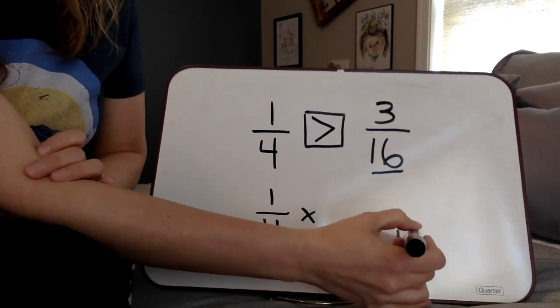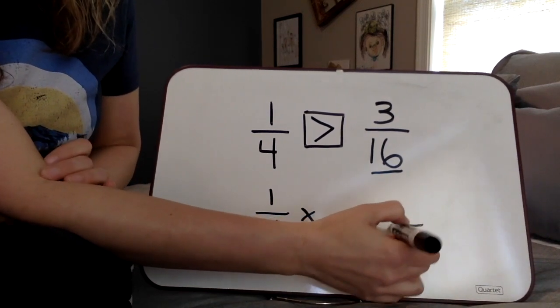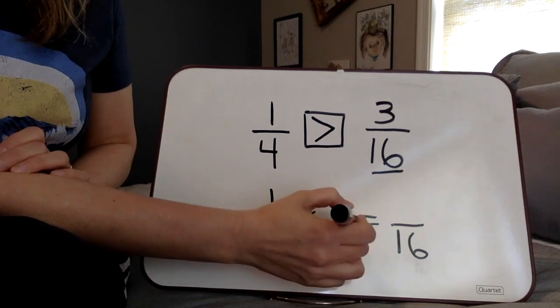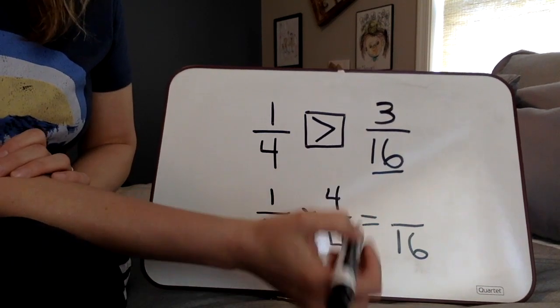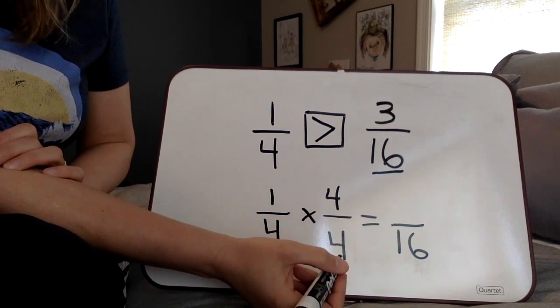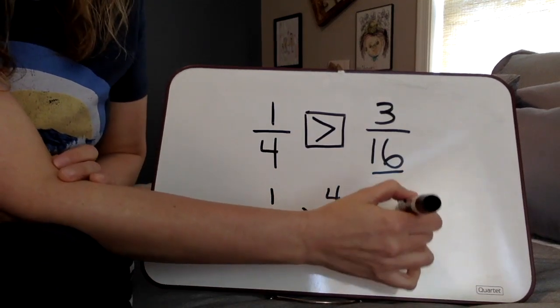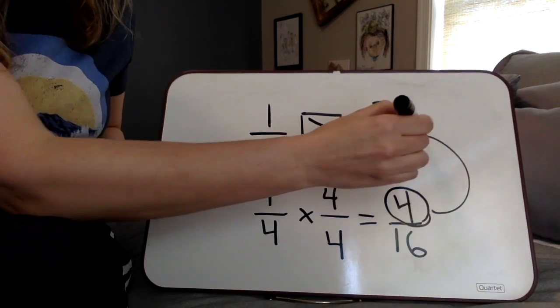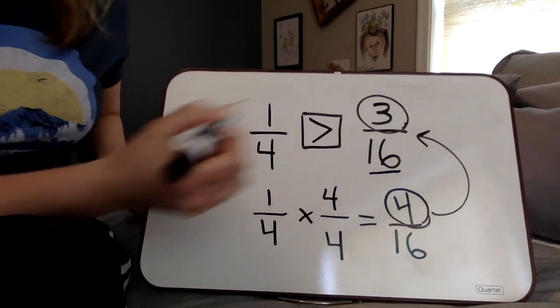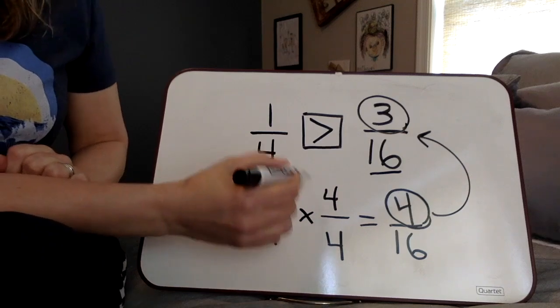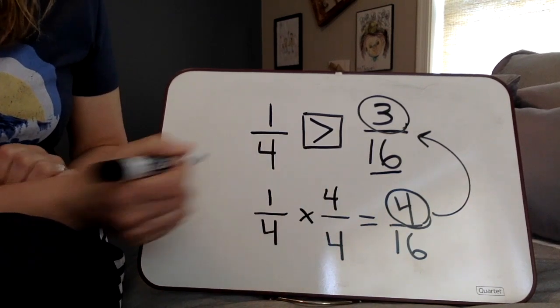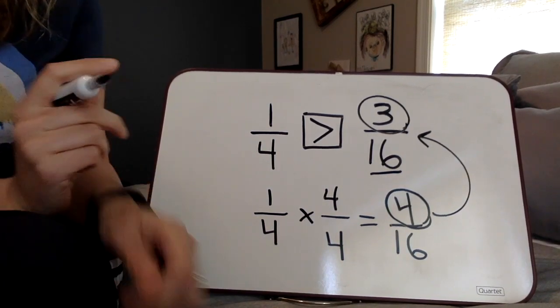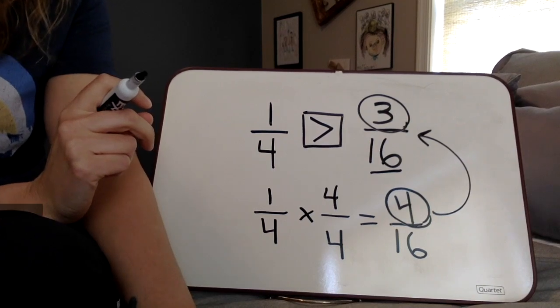So 4 times what is going to give us 16? 4 times 4. Remember, numerator and denominator have to be the same. So 1 times 4 is 4, and we can see that 4/16 is in fact greater than 3/16. So using that equivalent, we can then again prove that our model was correct.